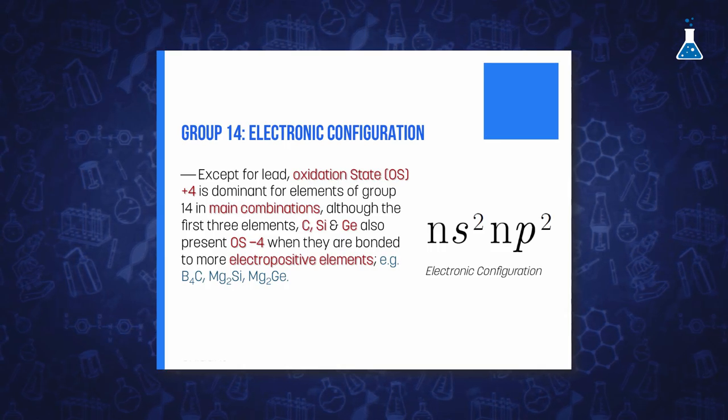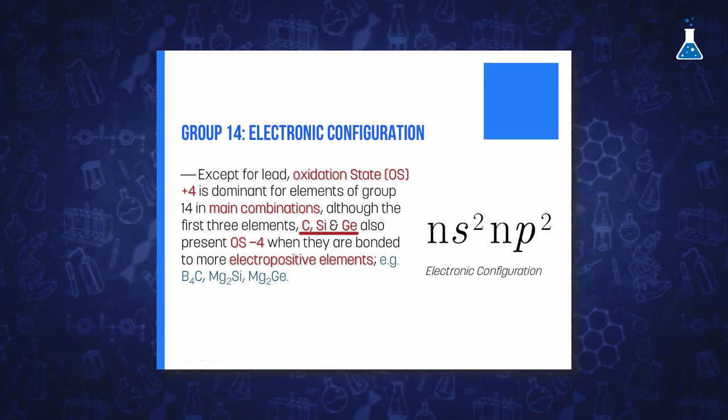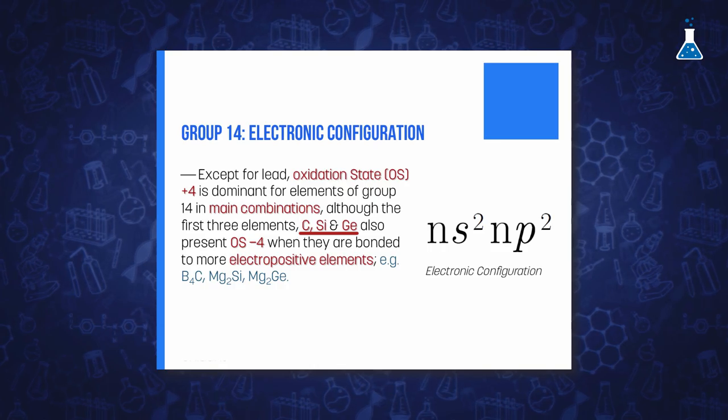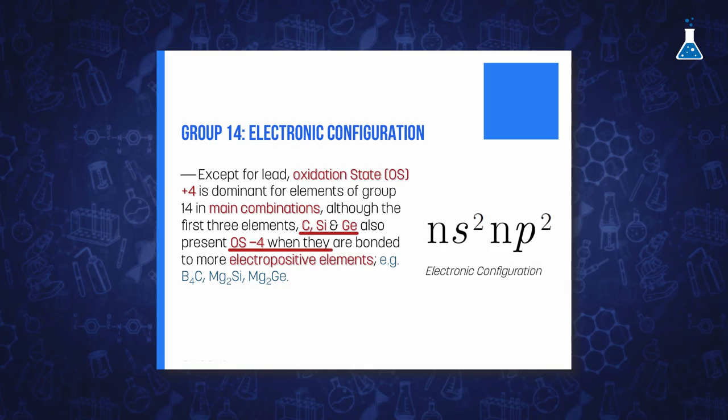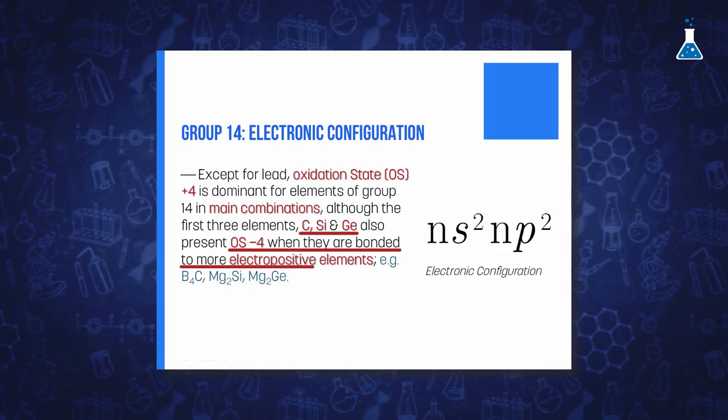The first three elements of the group, the non-metal carbon and the two semi-metals silicon and germanium, show an oxidation state of minus 4 when they are bonded to more electropositive elements.